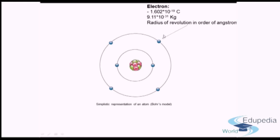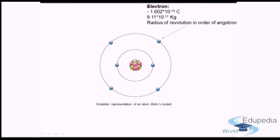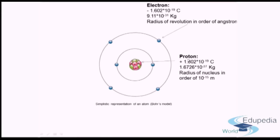The mass of an electron is 9.11 × 10⁻³¹ kg, on the order of 10⁻³¹ kg. The electron revolves around what is known as the nucleus of the atom. The radius of revolution — the distance from the center to the electron — is on the order of angstroms, and that defines the atomic size. The distance from the center to the outermost electron roughly gives an idea about the atomic size. The positive particles are known as protons.